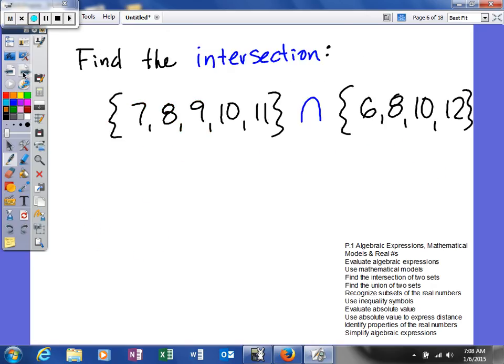So let's see if we can look at the first thing, which is we're going to find the intersection. Now we basically have two sets. There are five elements in this set right here: 7, 8, 9, 10, and 11. And then this set has four elements: 6, 8, 10, and 12.